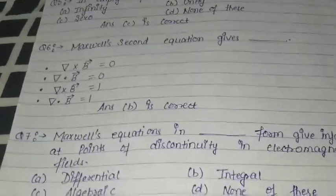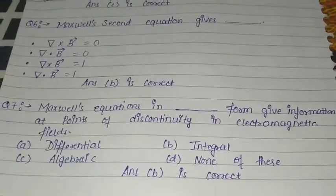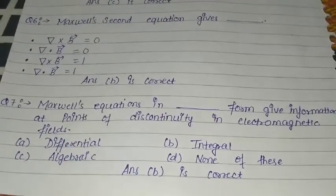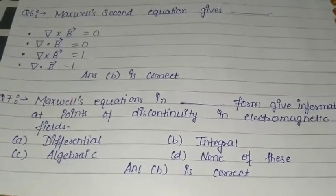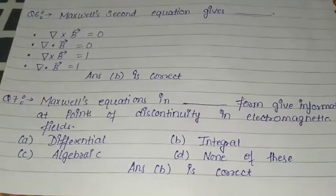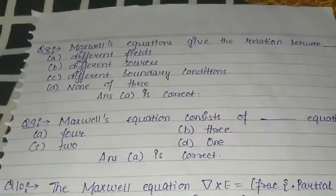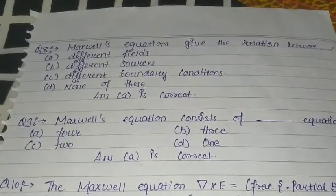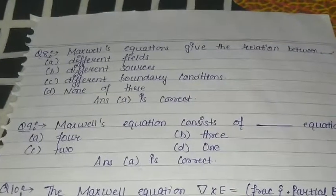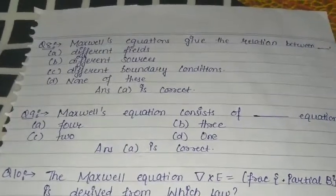Question number seven: Maxwell's equation in dash form gives information at points of discontinuity in electromagnetic fields — A. differential, B. integral, C. algebraic, D. none of these. Here option B is the correct answer: integral. Question number eight: Maxwell's equation gives the relation between — A. different fields, B. different sources, C. different boundary conditions, D. none of these. Option A is the correct answer: different fields.